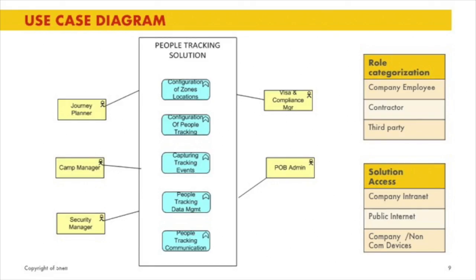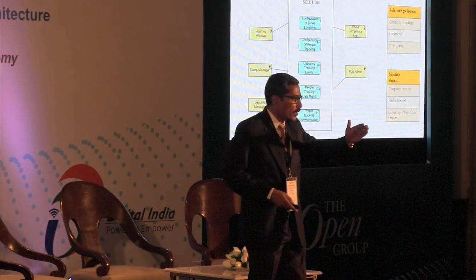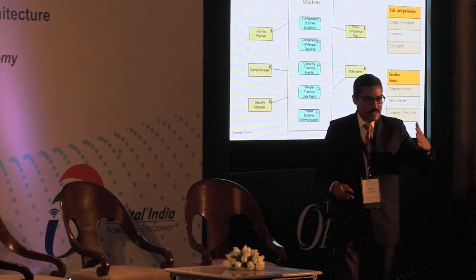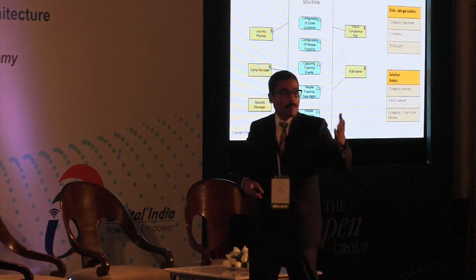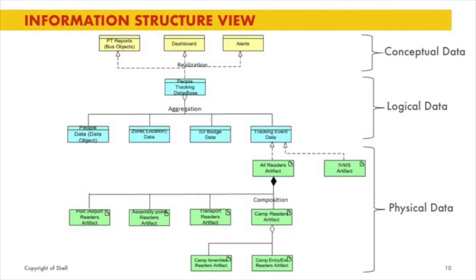The fourth diagram we created was a use case diagram — also mentioned in TOGAF literature, but drawn here with ArchiMate notation. You find a system with a boundary; within the system we have modeled the most important primary functionalities, and around the system you have roles and actors who will access it. From this diagram you can identify which user should be given access to which functionality — categorizing whether a user is a company employee, contract employee, or third-party employee, and how the solution is accessed via company device, private device, public network, or company internet.